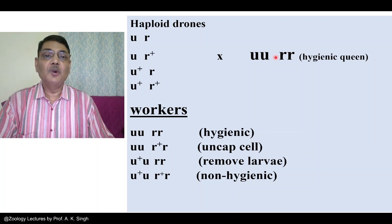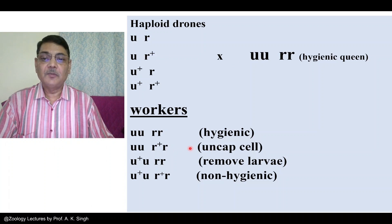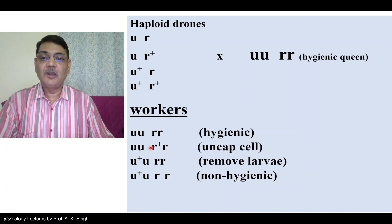If the UURR queen is mated with a male of genotype U R-plus, workers will have genotype UU and R-plus R. Such workers will be able to uncap the cell — they can remove the wax covering — but they will not be able to remove the dead larvae.